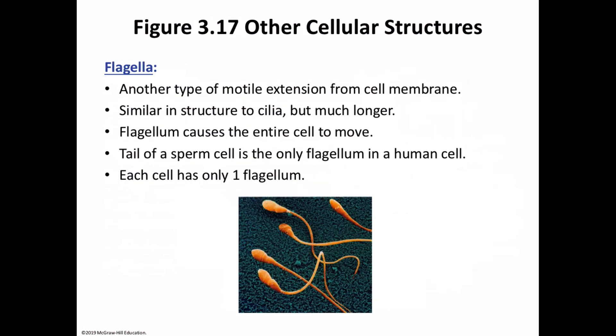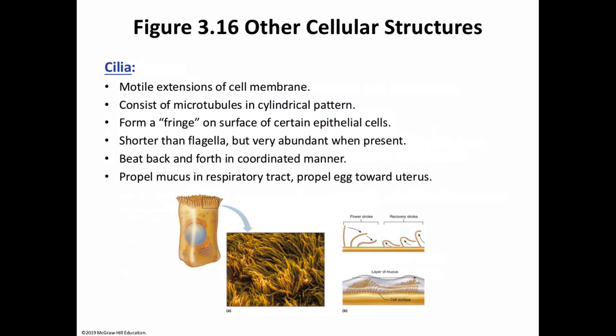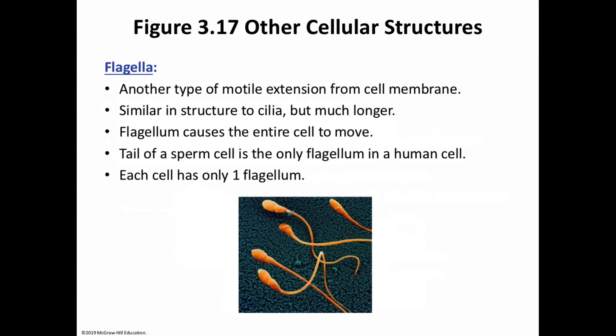To contrast with cilia, the flagellum is much longer and is for movement of the sperm cell. The tail of the sperm cell is that flagellum, which generates movement and allows it to swim in the correct direction. The only known flagellum in humans is on the sperm cell. Males should be aware that tight-fitting clothing can cause sperm cells to swim in the wrong direction.